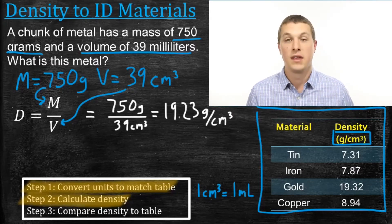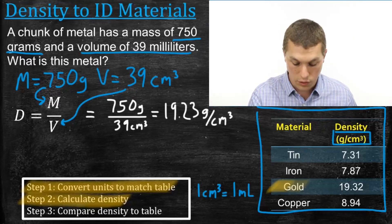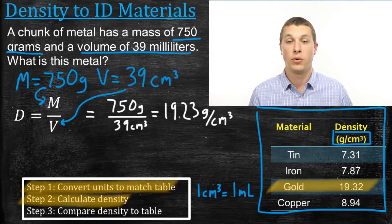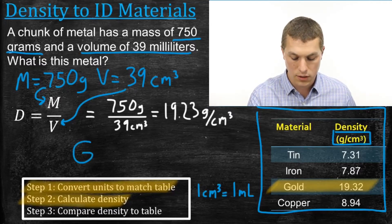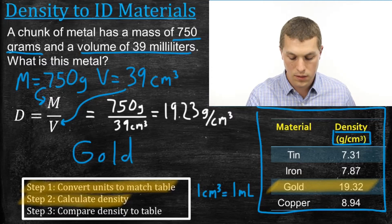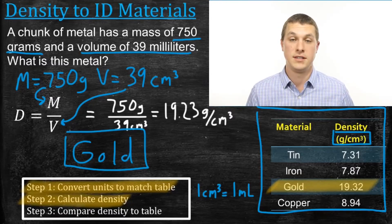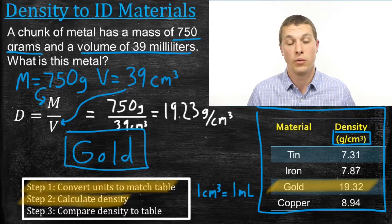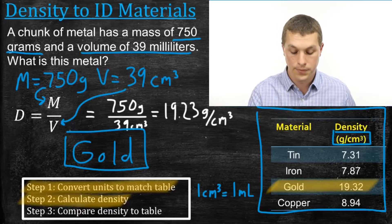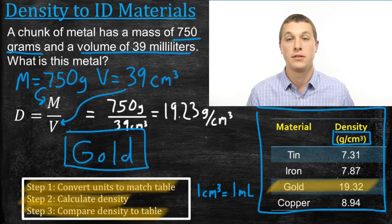Now we go compare to the table, and we see that clearly there's only one of these four metals that matches, and it's gold, which has a density of 19.32 grams per cubic centimeter. So we know that the object we were given is made out of gold. That was step three: comparing the density we calculated to the table.